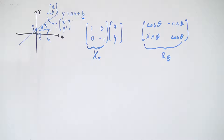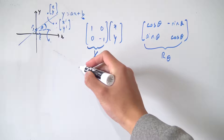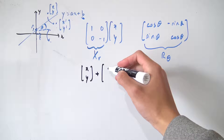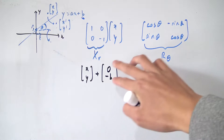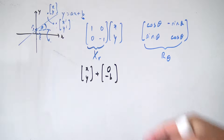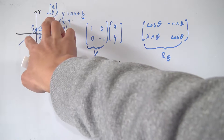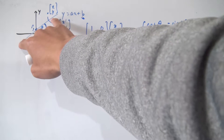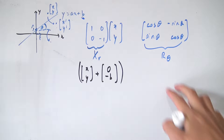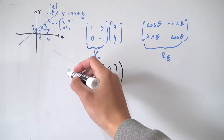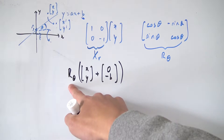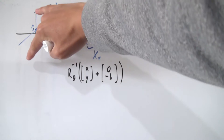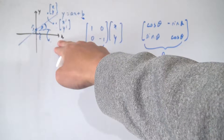Remember, b is the y-intercept, and we want to map that to zero first. So if we have some point xy, we first translate it b units down — so we add (0, -b) — which translates everything down by b. Since now this line passes through the origin, we can rotate things. We want to rotate the whole plane so that the line matches up to the x axis, using our rotation matrix. But notice we want to rotate clockwise — so we don't want R(θ), we want R(θ) inverse, so it maps into the x axis.